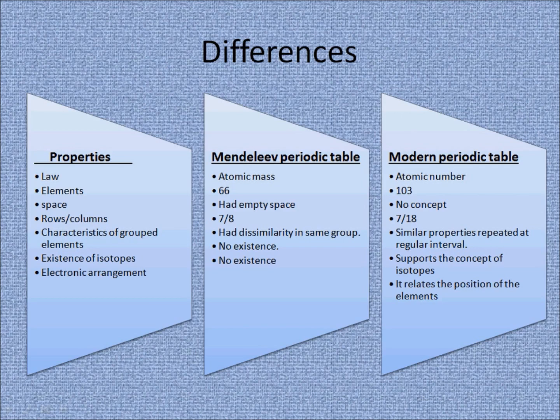This feature is the main building block of the modern periodic table as well. Mendeleev was able to identify that the chemical properties of elements begin repeating each time after a certain number of elements, so the term 'periods' came into use. The columns in the periodic table are called groups, as they group together elements with similar properties, and the rows are called periods. The main difference between the two periodic tables is the law they follow: the Mendeleev periodic table follows the order of atomic masses, whereas the modern periodic table orders elements based on atomic numbers.